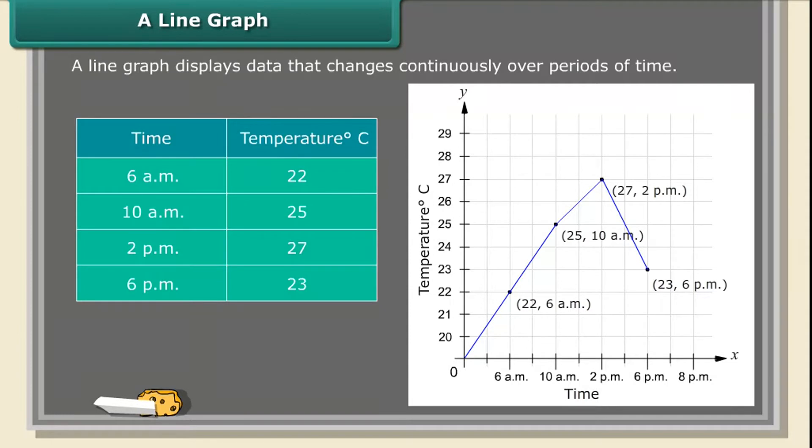The result is a line graph. From the graph, in between 10 a.m. and 2 p.m., we can find that the temperature was increased by 2 degrees Celsius.